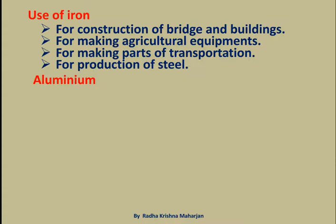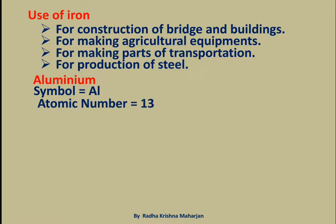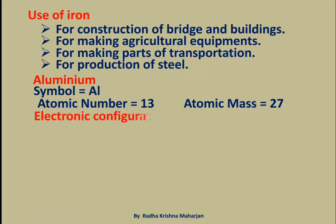Aluminium: Symbol Al, Atomic Number 13, Atomic Mass 27. Electronic Configuration: 1s2 2s2 2p6 3s2 3p1.